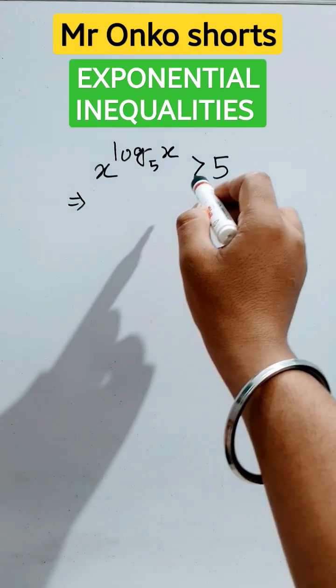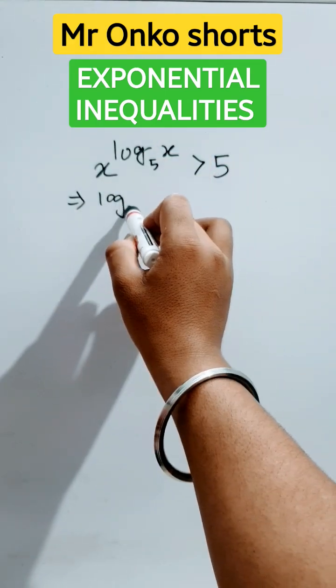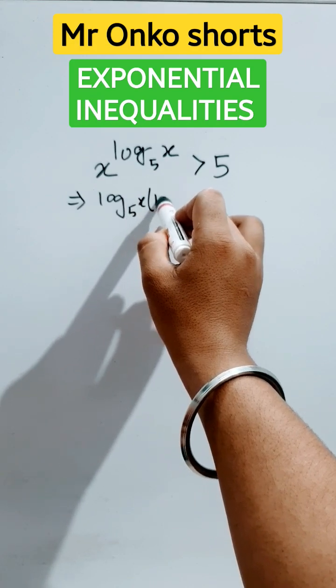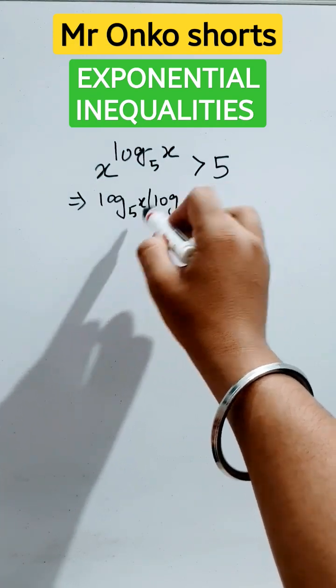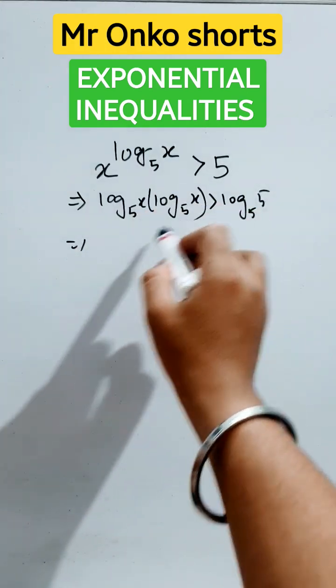Take logarithm in both sides to the base 5. So it will be this total part will be in the front side with the logarithm to the base 5, and here it will be log 5 to the base 5. So it will be same part.